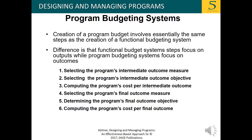For program budgeting systems, the creation of a program budget involves essentially the same steps as the creation of a functional budgeting system. The difference is that functional budget systems focus on outputs while program budgeting systems focus on outcomes. The steps include selecting the program's intermediate outcome measure, selecting the intermediate outcome objective, computing the cost per intermediate outcome, selecting the final outcome measure, determining the final outcome objective, and computing the cost per final outcome.